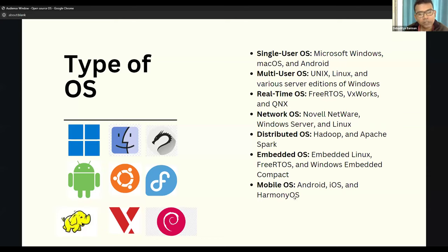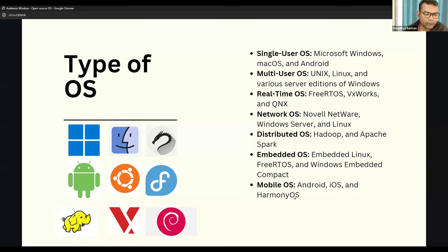Mobile Operating Systems are perhaps most familiar since most of us hold smartphones. All smartphones run on mobile operating systems like Android, iOS, and Harmony OS. Android is maintained by Google, iOS by Apple. The newer OS called Harmony OS is developed by Huawei.